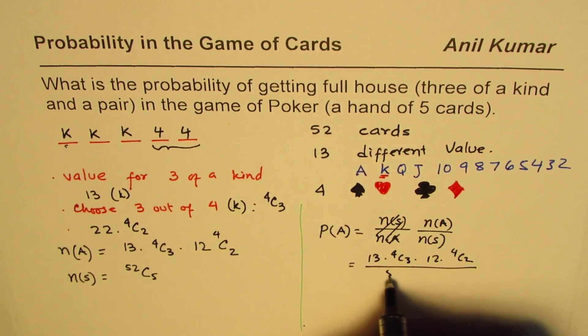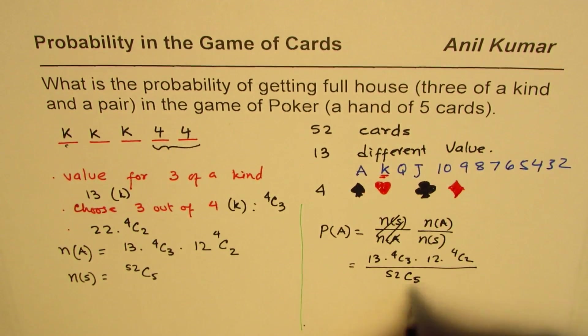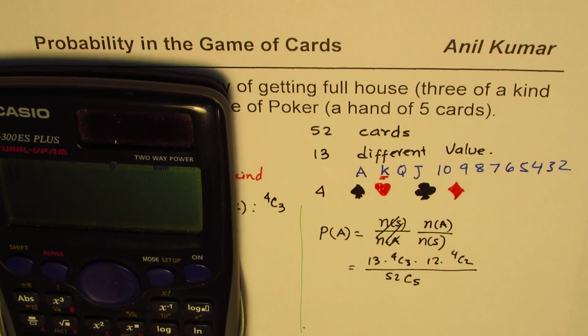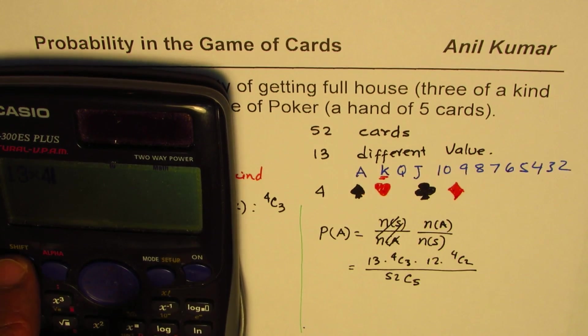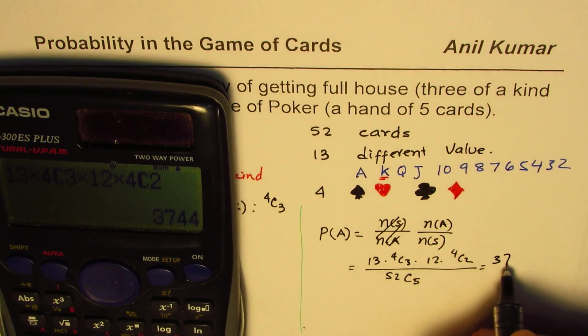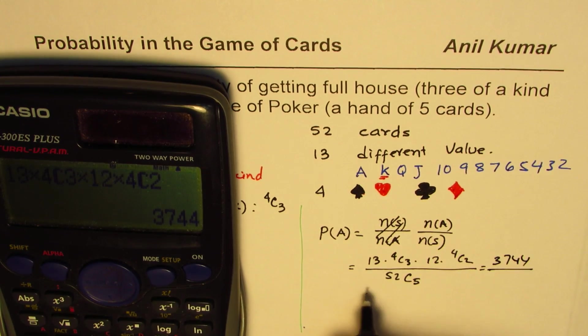Okay, so we can use the calculator to find the answer. So it is 13 times 4C3 times 12 times 4C2. That's the numerator: 3744.